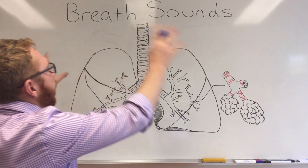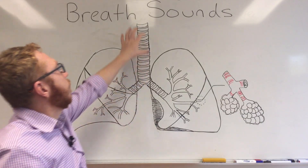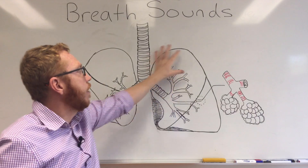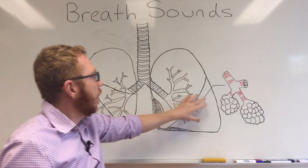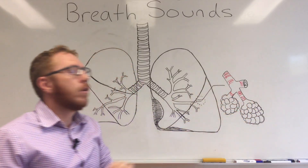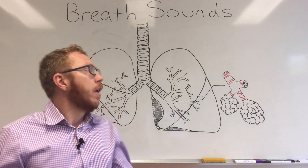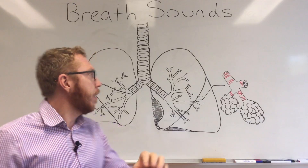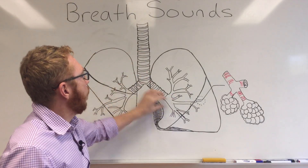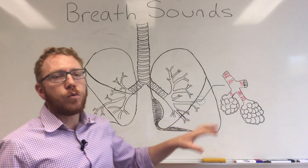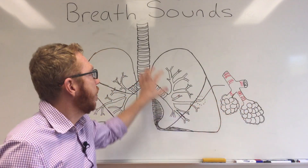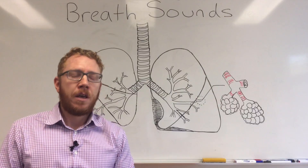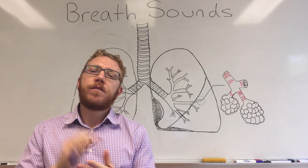Starting with this picture on the board, we've got the trachea coming down into the bronchial tree and then the lung fields. There's also an insert showing the terminal bronchioles into the alveoli. The two main normal breath sounds are the bronchial sounds, associated with the bronchial tree, and the vesicular sounds, associated more with the alveoli and the broader area of the lung. Today we'll focus on the four abnormal types.